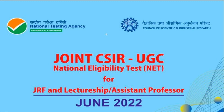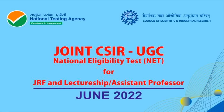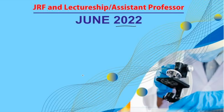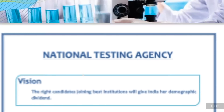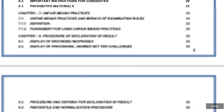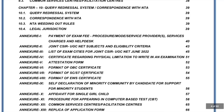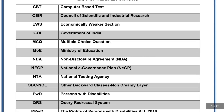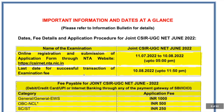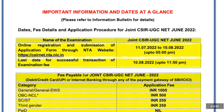This is the CSIR UGC NET June 2022 information brochure — this is the whole PDF you will get. I'll scroll past the contents and only talk about important things so you get all the information in a single video. Here are the important information and dates at a glance.